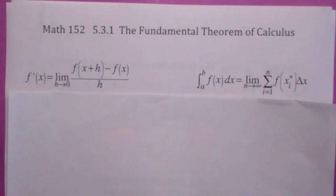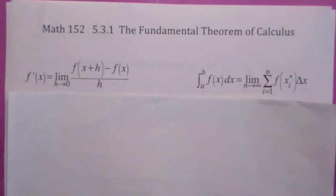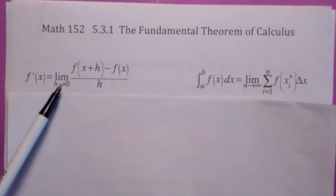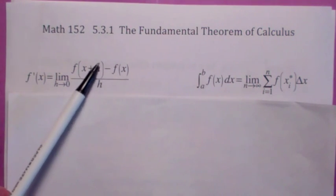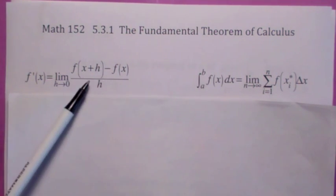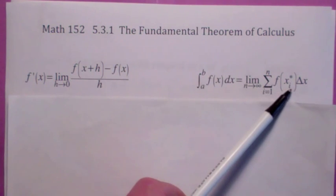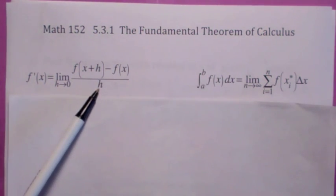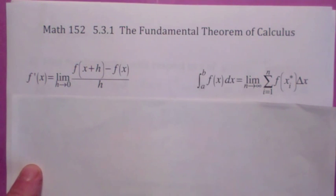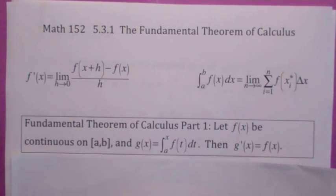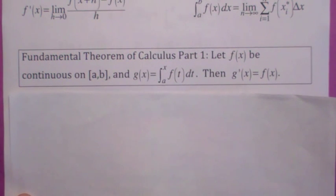Before I tell you what the first part of the fundamental theorem of calculus says, let's just look at this idea in general. Differentiation and integration are, in a sense, inverse operations. When you have a derivative, you subtract and then you divide. What's the inverse operation of division? Multiplication. When you have a Riemann sum, you would first multiply — that's the inverse of division — and then you add these up, which is the inverse of subtraction. So very loosely, you could think of differentiation and integration as being inverse operations, and that's kind of what the fundamental theorem of calculus part one says.